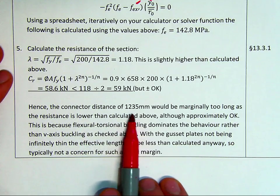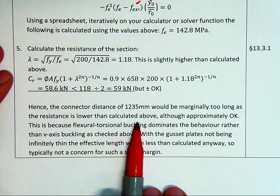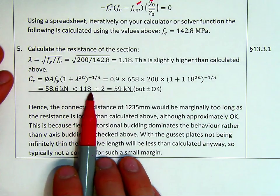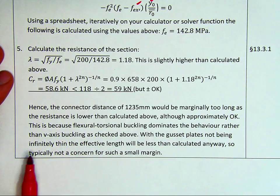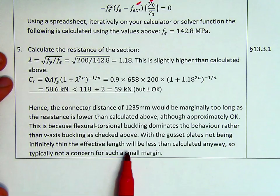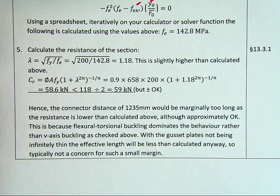Hence, the connector distance of 1235 would be marginally too long as the resistance is lower than calculated above, although approximately okay. So as I said, this is from the previous example. This is because flexural torsional buckling dominates the behavior rather than v-axis buckling as checked above. However, with the gusset plates not being infinitely thin, the effective length will be less than calculated anyway, so typically not a problem. And that would be, if we had them at exactly 1235 apart.